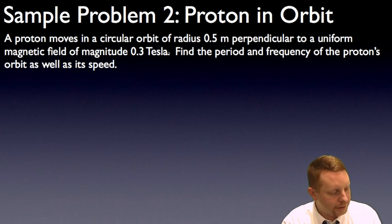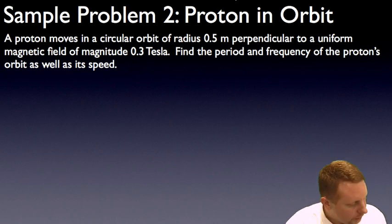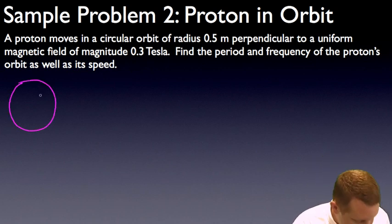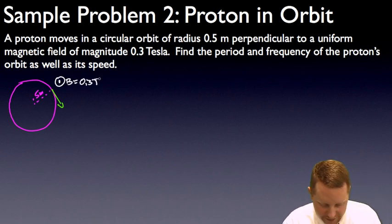Let's try another one. A proton moves in a circular orbit of radius half a meter perpendicular to a uniform magnetic field of magnitude 0.3 tesla. Find the period and frequency of the proton's orbit as well as its speed. Now let's draw a little quick diagram here. There's our proton in orbit. We'll give it a radius of half a meter. At some point here, it has a velocity perpendicular to that radius line. And we know that we have a magnetic field coming out of the page at us equal to 0.3 tesla.